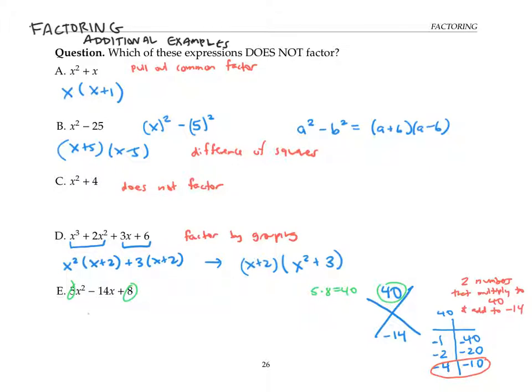So the next step is to use factoring by grouping. We're going to first split up this negative 14x as negative 4x minus 10x and carry down the eight and the five x squared. Notice that this works because I picked negative four and negative 10 to add up to negative 14. So negative 4x minus 10x will add up to negative 14x. So I've got the same expression just expanded out a little bit.